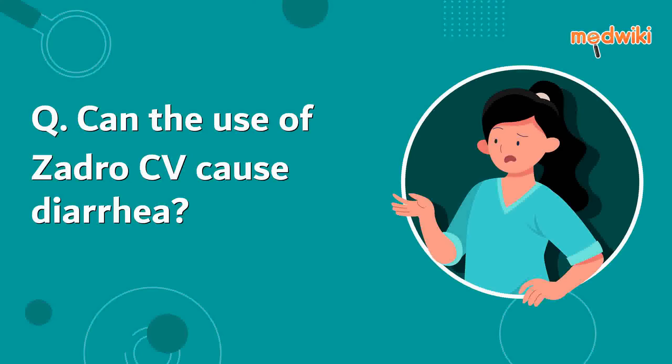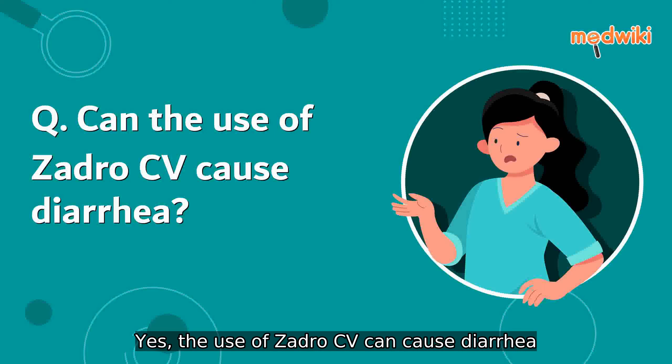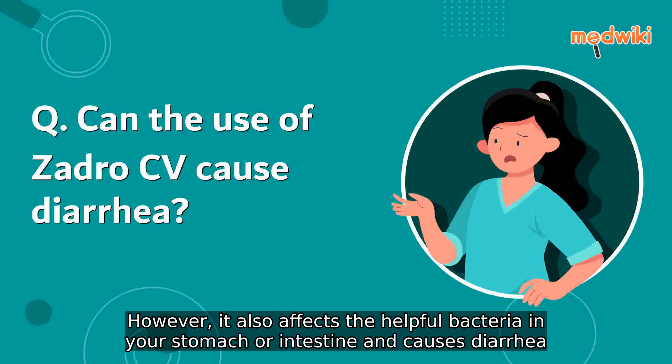Can the use of Zadro-CV cause diarrhea? Yes, the use of Zadro-CV can cause diarrhea. It is an antibiotic which kills the harmful bacteria. However, it also affects the helpful bacteria in your stomach or intestine and causes diarrhea.